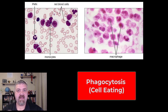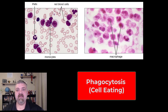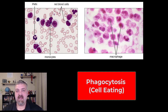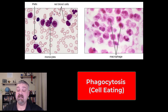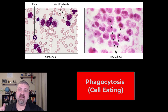Phagocytosis — phago means to eat, cyto means cells. So phagocytosis is the process of cells eating things, engulfing things that shouldn't be there. This is part of your innate immune response because it's nonspecific. These cells don't care what they're attacking; they just know what shouldn't be there and they engulf it. This is also a link to your adaptive immune response, and I'll show you that at the end.